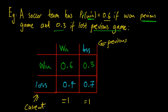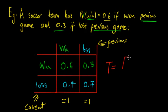Looking across the rows is looking at the current outcome, which doesn't have to equal 1. So you set up this table, then we can say the transition matrix T is equal to 0.6, 0.3, 0.4, 0.7.